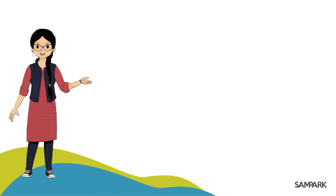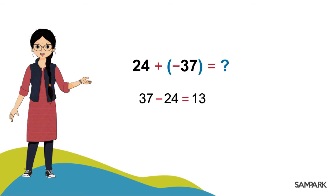Ab kya aap 24 plus minus 37 ka uttar bata sakte hain? Jaldi jaldi — shabash! 24 plus minus 37 hua minus 13.